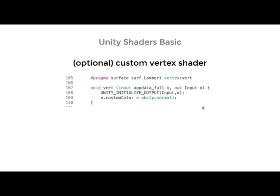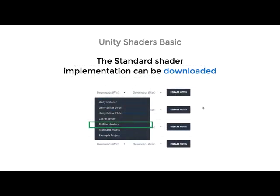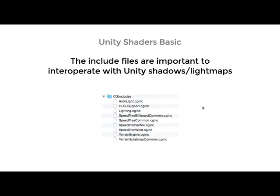An optional thing is to have a custom vertex shader. You wouldn't normally need that, but some calculations can be cheaper to do in the vertex shader and will still be accurate enough. There is also some data you can only access in the vertex shader, so you need to save that in a struct and pass it on. The standard vertex shader is included in the standard shader implementation file, which you can download from the Unity version downloader on the Unity website. In the dropdown for each version, there is a built-in shaders field that gives you all the shader implementation files, including many CG include files you'll need to hook into shadows, light maps, and global illumination.